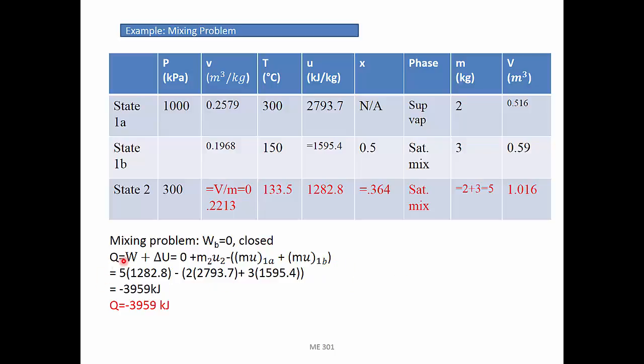We know now the first law is Q equal to work plus the change of internal energy. Work for all three types are equal to zero. We can write the changes of internal energy as internal energy at the final state minus internal energy of the first state.